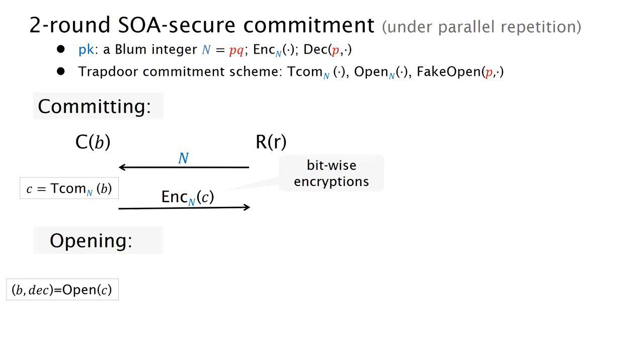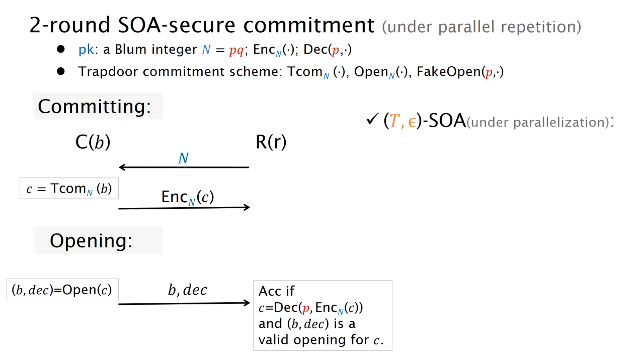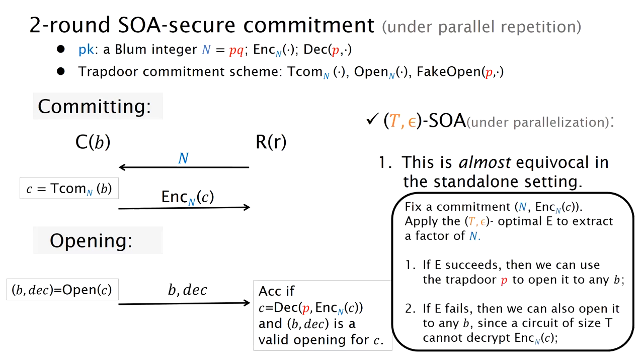And in the opening phase, the sender computes openings and sends B and the commitment to the receiver. And then the receiver first decrypts the ciphertext he received in the committing phase. And then checks that B and the commitment is a valid opening for C. The binding property follows from the fact that two valid openings need to factor N.